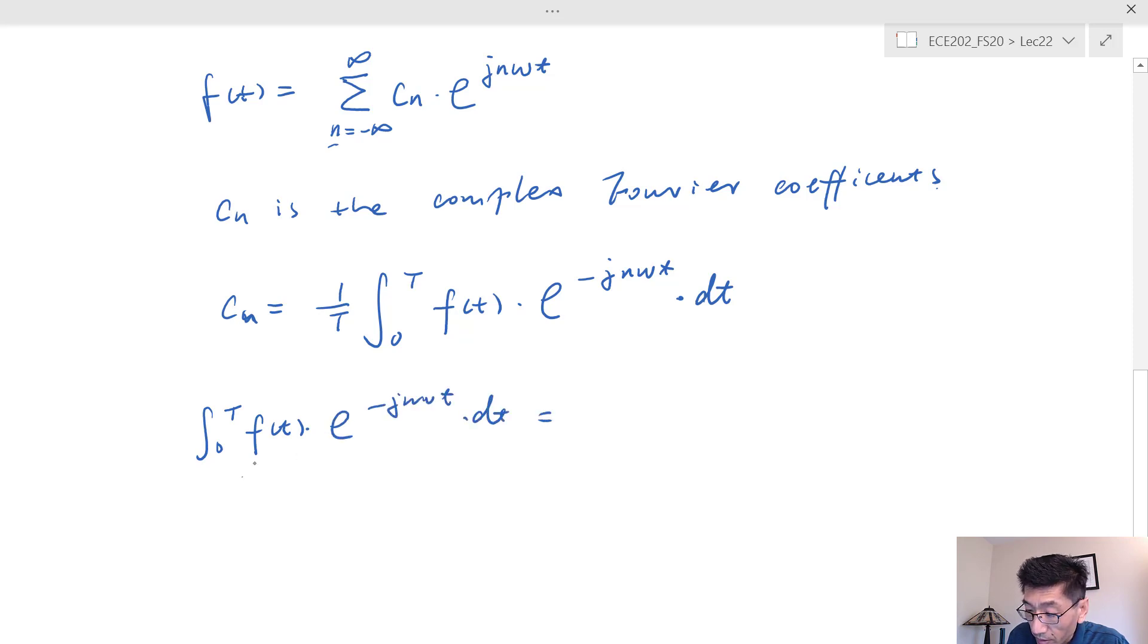We replace f by sigma. Now we change that to k so that we don't get ourselves confused with this n here. So we have negative infinity to infinity, C_k times e^(j*k*omega*t).